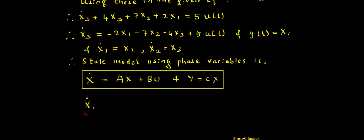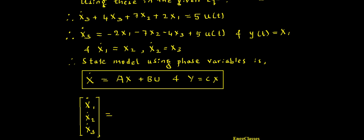X-dot is a matrix which has three variables: X1-dot, X2-dot, and X3-dot. Let me put this in matrix form. This equals A, which is going to be a 3×3 matrix. Let me write the space for that — yes, it is a 3×3 matrix.